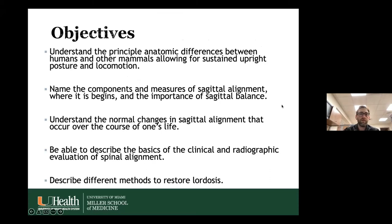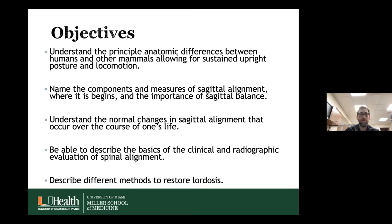We're going to talk about anatomic differences between humans and other mammals that allow for sustained upright posture and locomotion. Humans are the only habitual bipedal mammal, and there are reasons for that. We'll discuss sagittal alignment, the importance of sagittal balance, all the associated parameters, changes in sagittal alignment over the course of one's life, basics of clinical evaluation, and a couple of operative points.